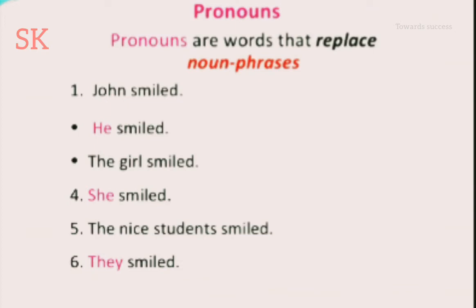Here are some examples. 'John smiled' — smiled is a verb, John is a noun before the verb, so we say 'He smiled.' 'The girl smiled' becomes 'She smiled.' 'The nice students smiled' — students is more than one person — so we say 'They smiled.'